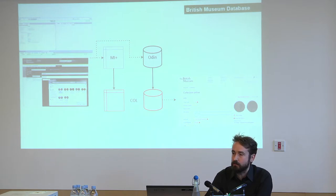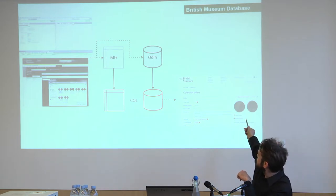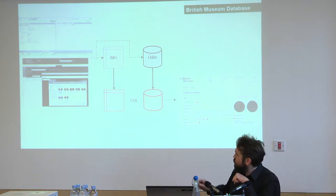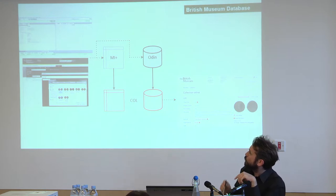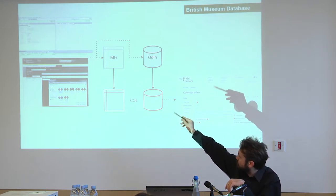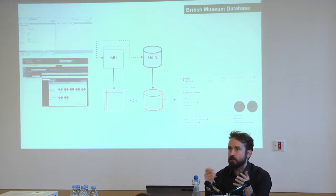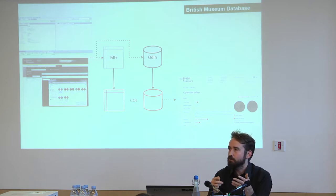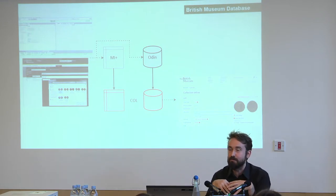If you access data from outside, what you see are these two shadow databases, which in theory contain the same information as the two places where we put data in — accepting things like personal addresses and precisely where an object is located in the museum, the kind of thing we don't want you to know but want to remember ourselves.